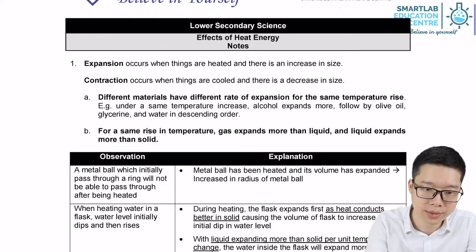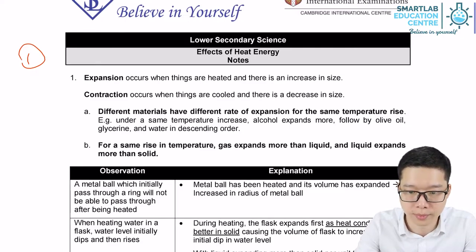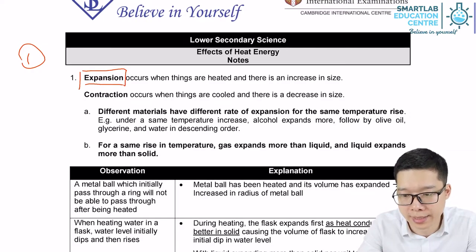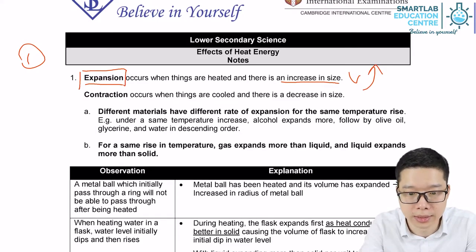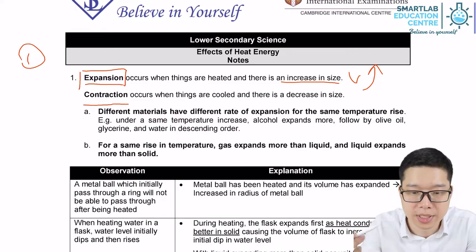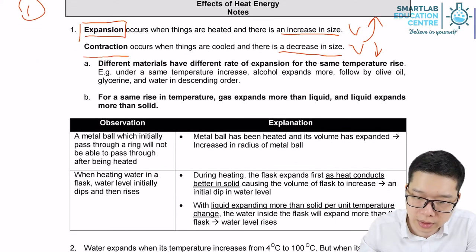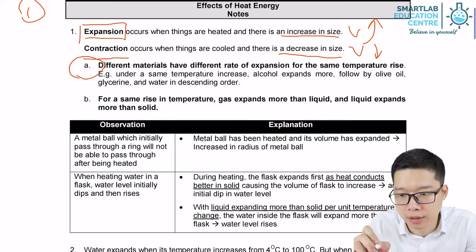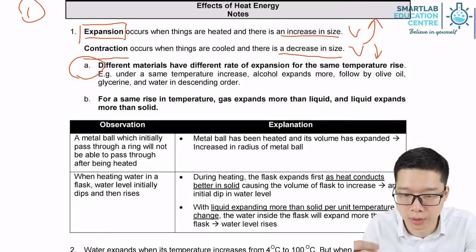We'll start with part one. When a small amount of heat is absorbed or lost, what will happen to the metal? When a small amount of heat is absorbed, all metal will experience an expansion — an increase in size or increase in volume. Vice versa, when a small amount of heat is lost, all metal will experience contraction — a decrease in size or decrease in volume. Note that different metals will expand or contract by different volumes even when they absorb or lose the same amount of heat.